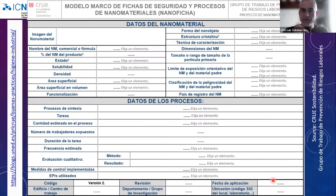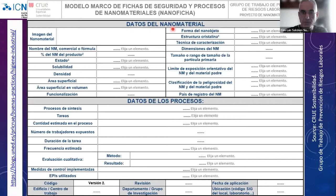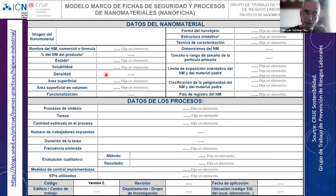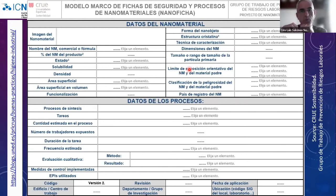This framework we designed contains the basic information we need when there is no adequate data. It starts with the main data of the nanomaterials and the processes used in the research or laboratories. It is in Spanish, but this type of information should be researched between the health and safety officer and the researcher. Since it is flexible, we can adapt it and check the information or add whatever could be of interest.